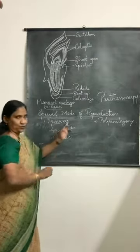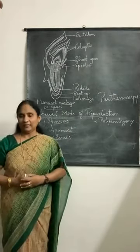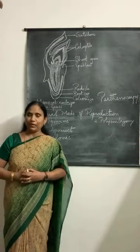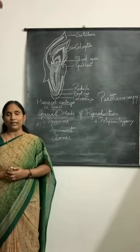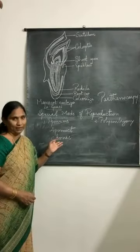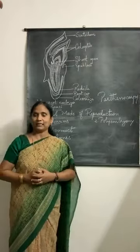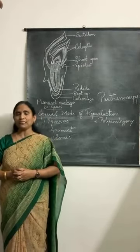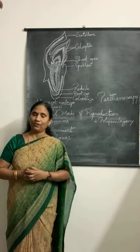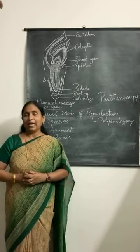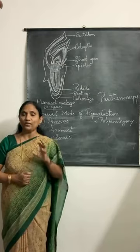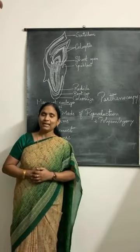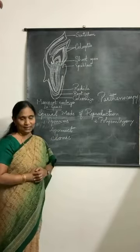Apomixis is an asexual mode of reproduction, but it mimics sexual reproduction, especially seed formation, without reduction division or fertilization taking place. So it is a type of mimicry. It mimics sexual reproduction including the formation of seeds, because here reduction division is not taking place, gametes are not formed, and fertilization is not taking place. It is a genetic phenomenon — apomixis is controlled genetically by genes.